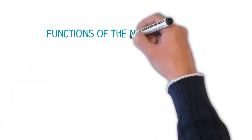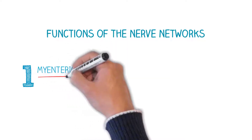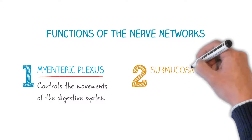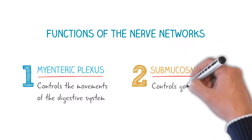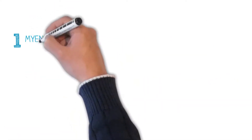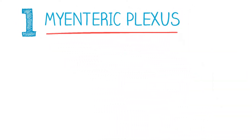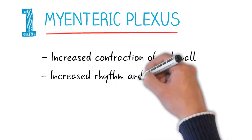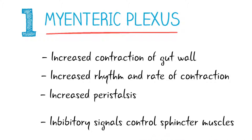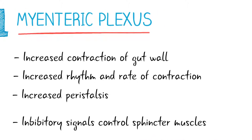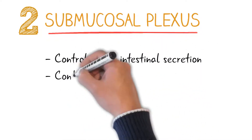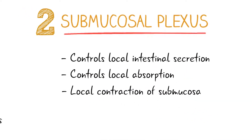What are the functions of these nerve networks? The myenteric plexus mainly controls the movements of the digestive system. The submucosal plexus controls the various secretions and local blood flow of the gut. Specifically, the myenteric plexus causes increased contraction of the gut wall and increases the rhythm and rate of contraction, resulting in increased peristaltic activity. Apart from excitatory signals, the myenteric plexus also produces inhibitory signals, which control the activities of various sphincter muscles associated with the gut. The submucosal plexus controls local intestinal secretion, local absorption, and the local contraction of submucosa, which causes the infolding of gastrointestinal mucosa.